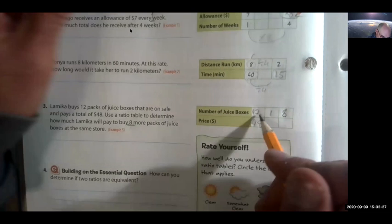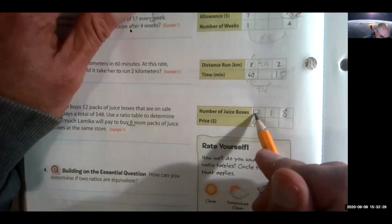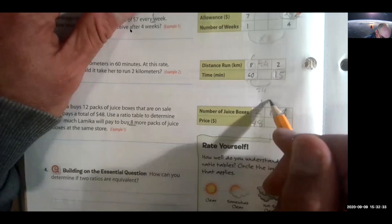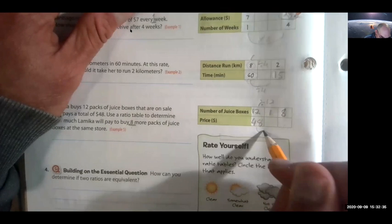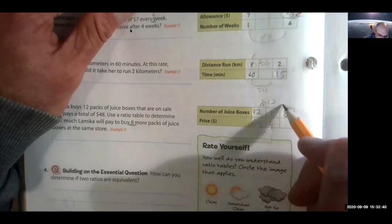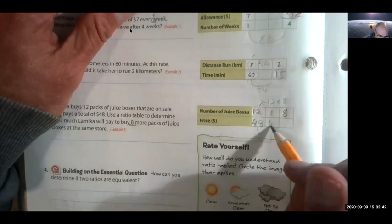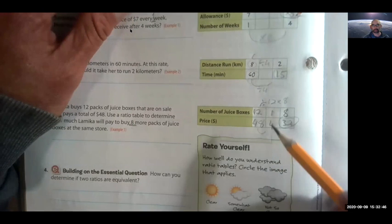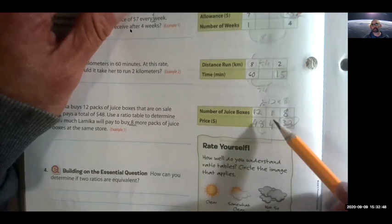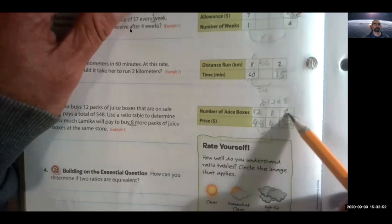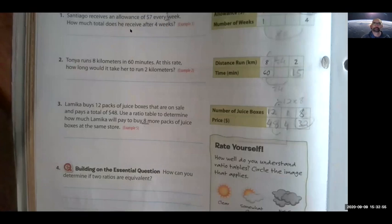All right, cool. All right, so what you should have done is 12 divided by 12, divide by 12 is 1, 48 divided by 12 is 4. And now I can easily say, well, 1 times 8, times 8 is 8, 4 times 8 is 32, so it costs $32. This is a big thing that we use a lot, is you find the unit price. How much does one of them cost? Then you can figure out how much any of them cost. Got it?